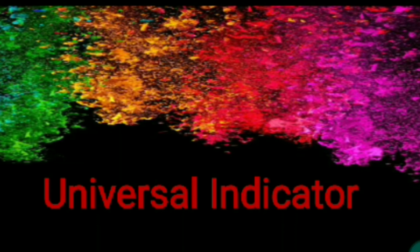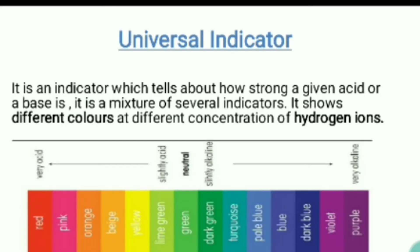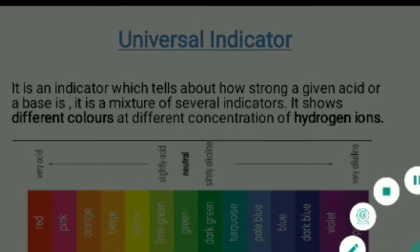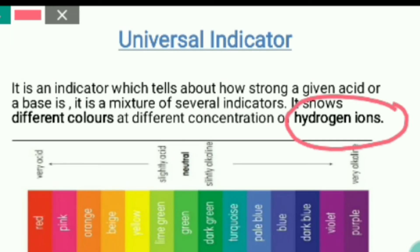The next is the universal indicator. It is an indicator which helps us know how strong a given acid or base is. Many other indicators only tell us whether something is acidic or basic, but to know how strong the acid or base is, we use the universal indicator. It works based on hydrogen ions — how many hydrogen ions are released. When pH is 1 to 6, those are acids. pH 7 is neutral — neither acidic nor basic. And above 7, from 8 to 14, we have bases.